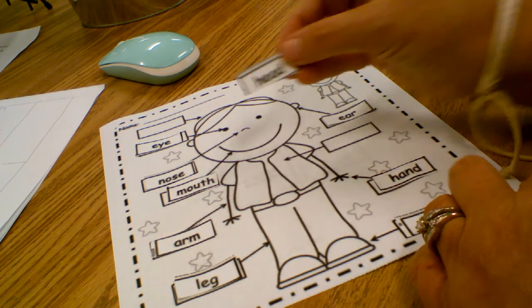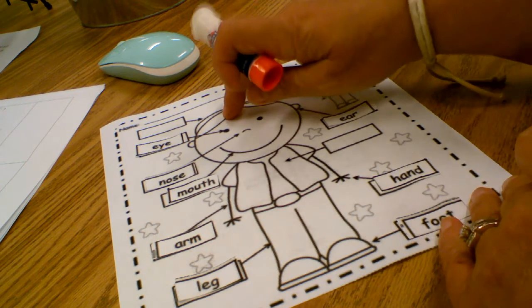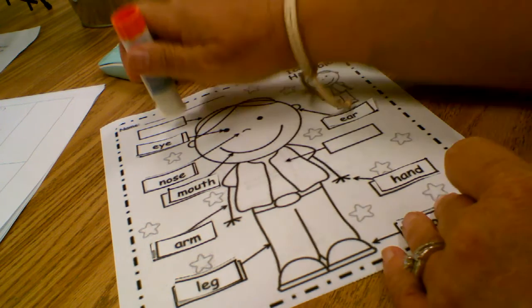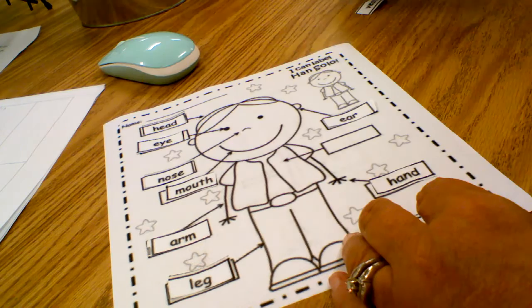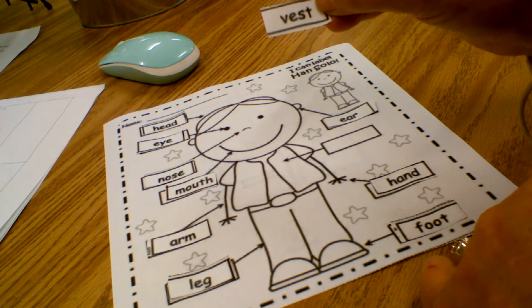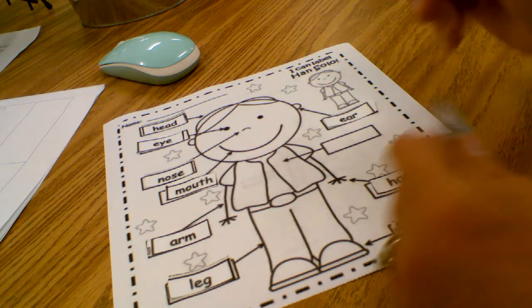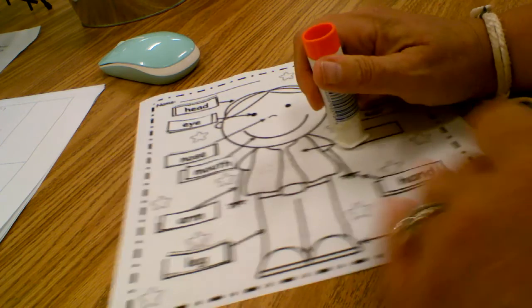And this one says head. That's the first thing he painted red was his head. Head. Now this one says vest. It's not really a body part. But here it is pointing to the vest.